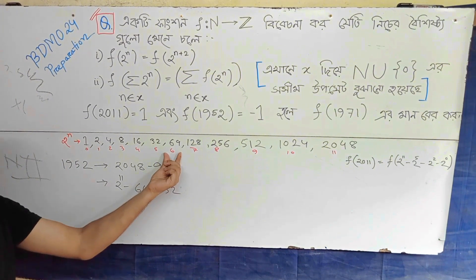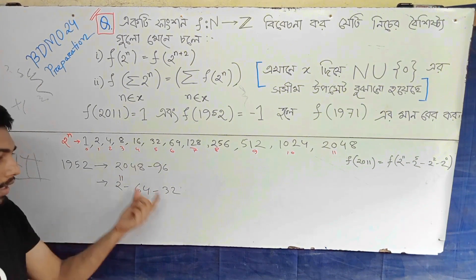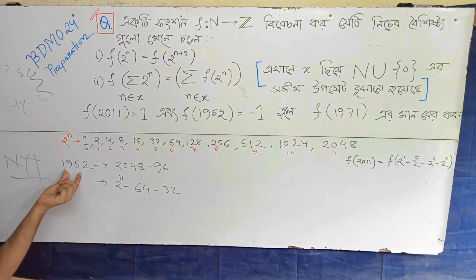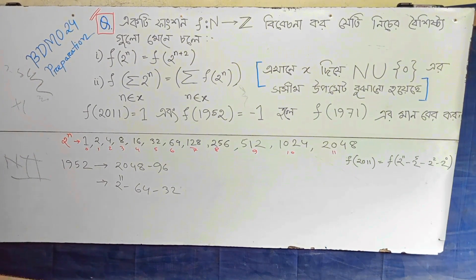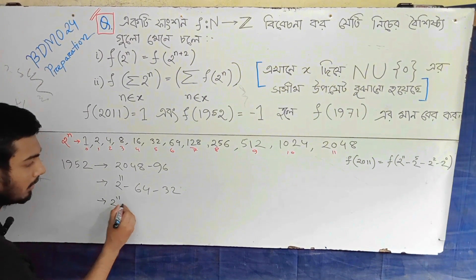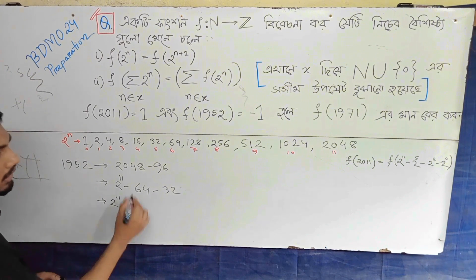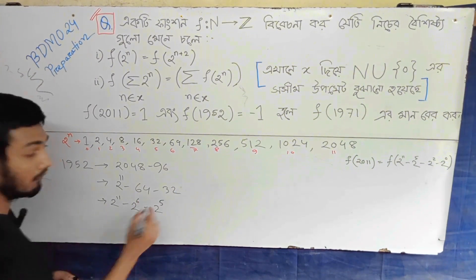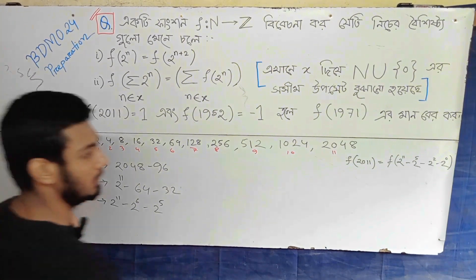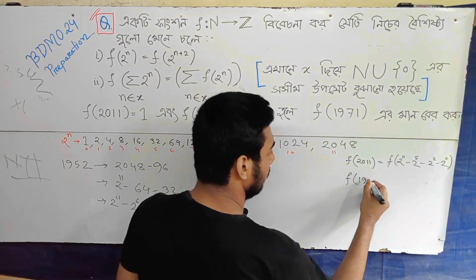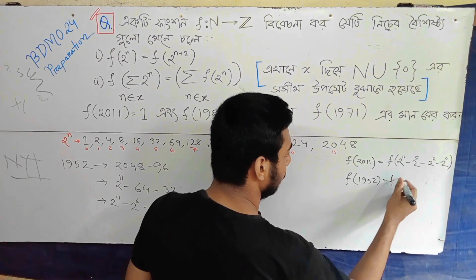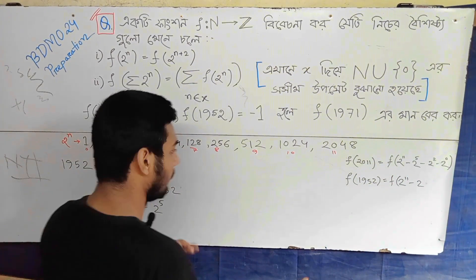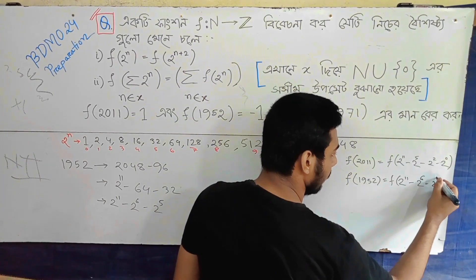64 is 2 to the power 6. 32 is 2 to the power 5. Now here we can get 2 to the power 5. So 96 becomes 952. This means the next itself will be 2 to the power 11 minus 64. You can get 2 to the power 6 minus 32. So 32 minus 32 is 2 to the power 5. So f of 1952 equals f of 2 to the power 11 minus 2 to the power 6, minus 2 to the power 5.